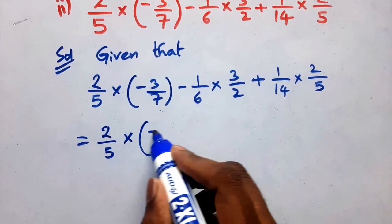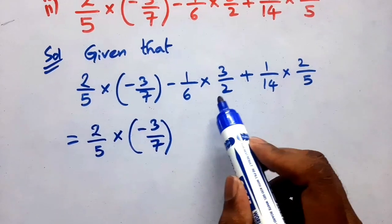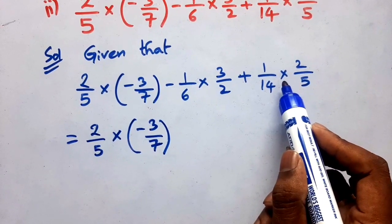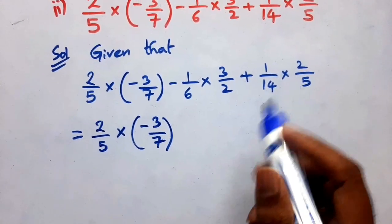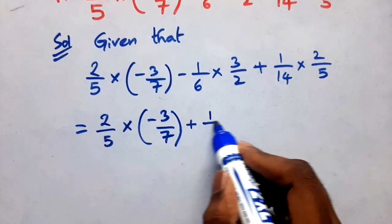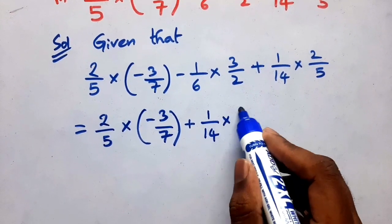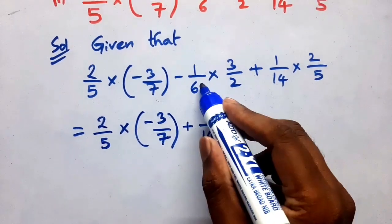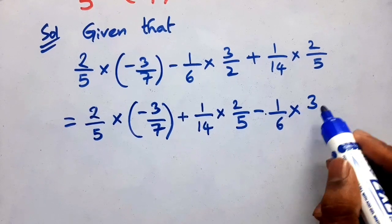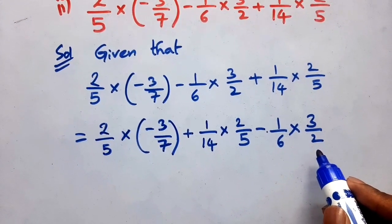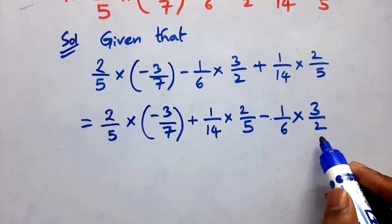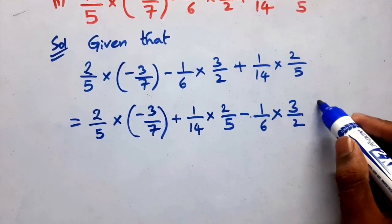So write 2 by 5 into minus 3 by 7 first. Since a plus b equals b plus a, we write the third term plus 1 by 14 into 2 by 5 in first place, then minus 1 by 6 into 3 by 2. Here we applied the commutative property: a plus b equals b plus a.